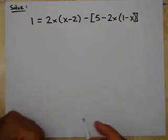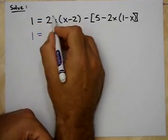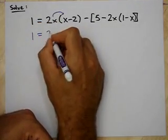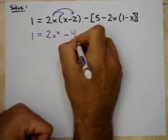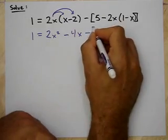And finally, one more. If 1 equals, let's distribute this 2x. 2x times x is 2x squared. 2x times negative 2 is negative 4x. I'm going to subtract all this stuff.